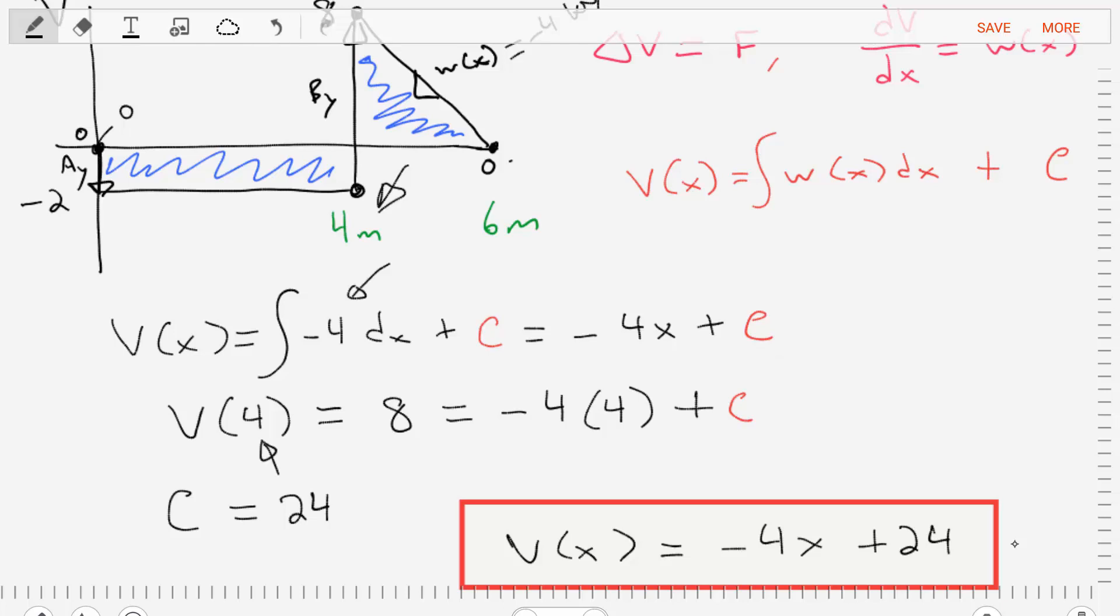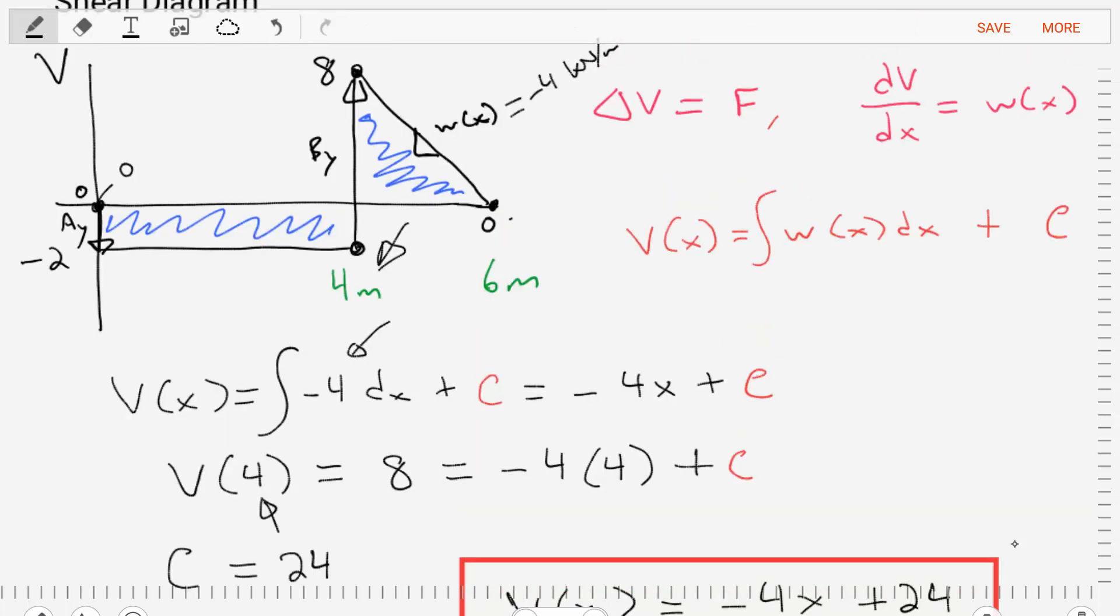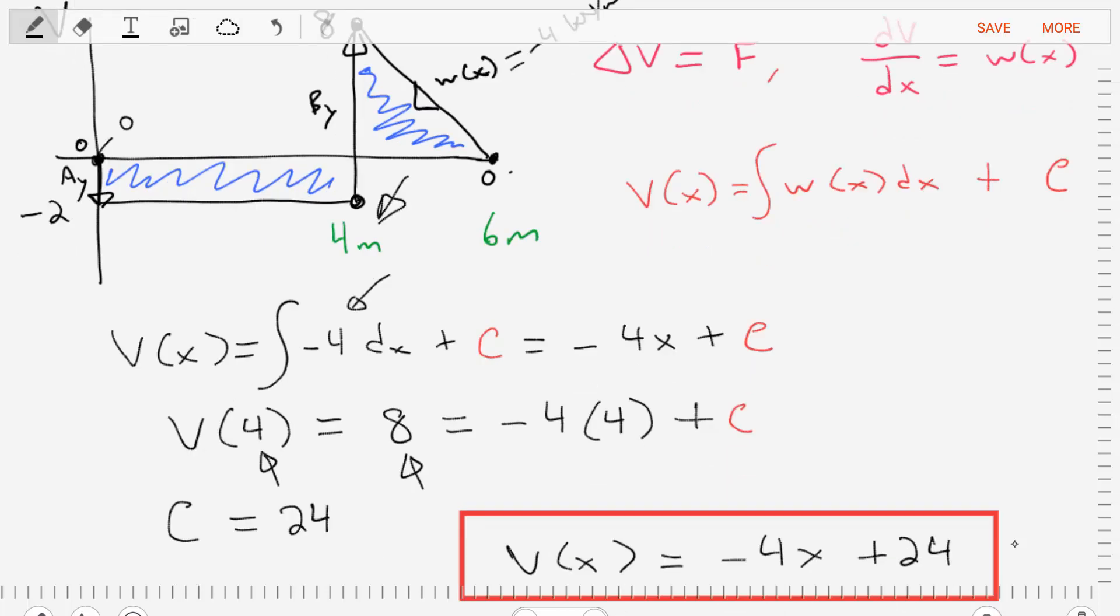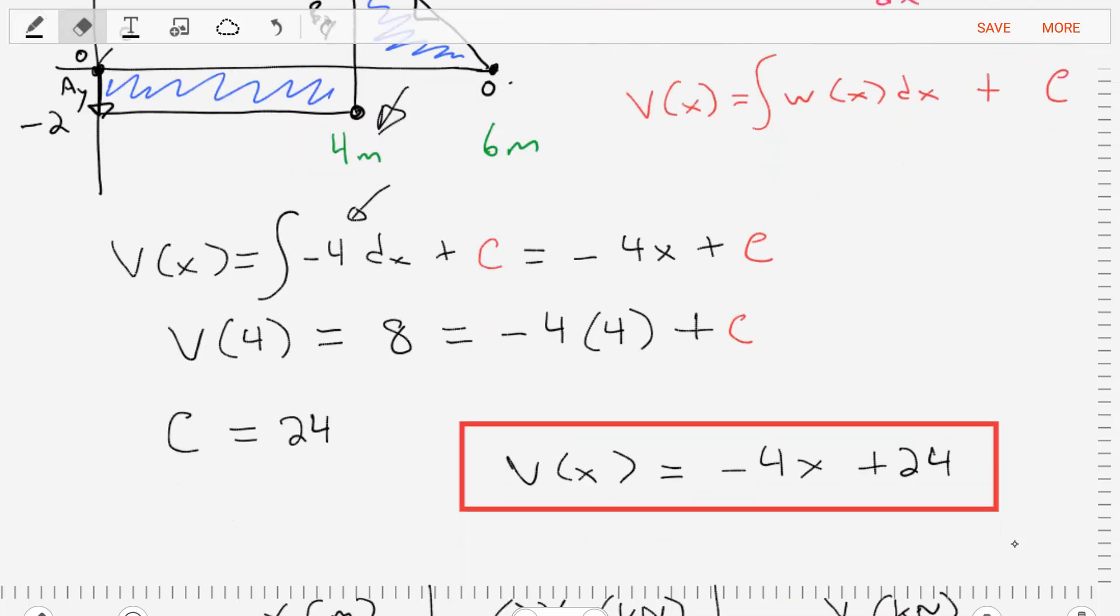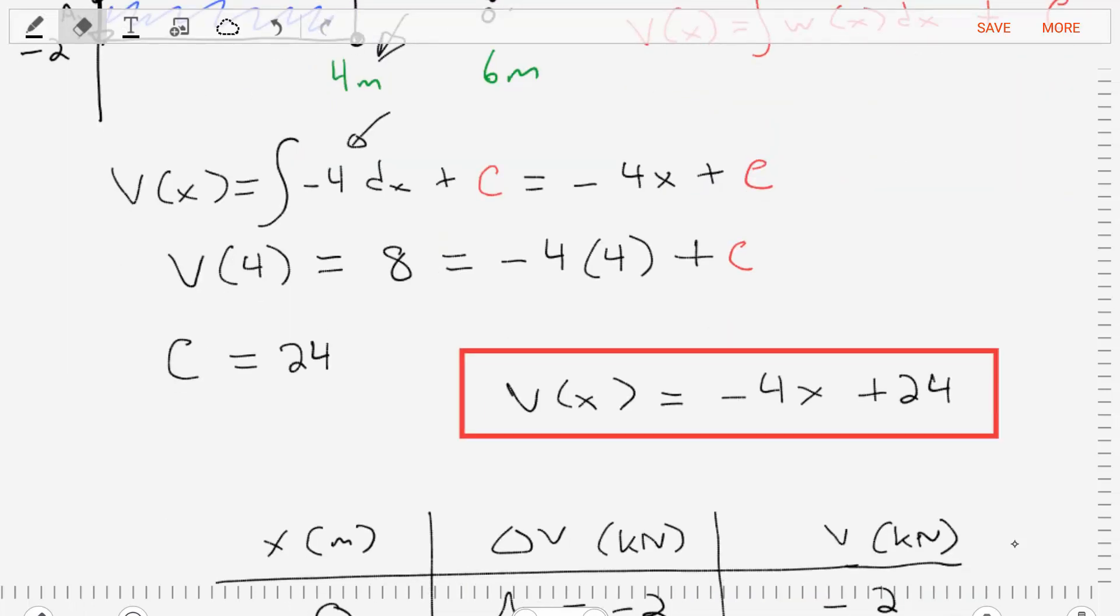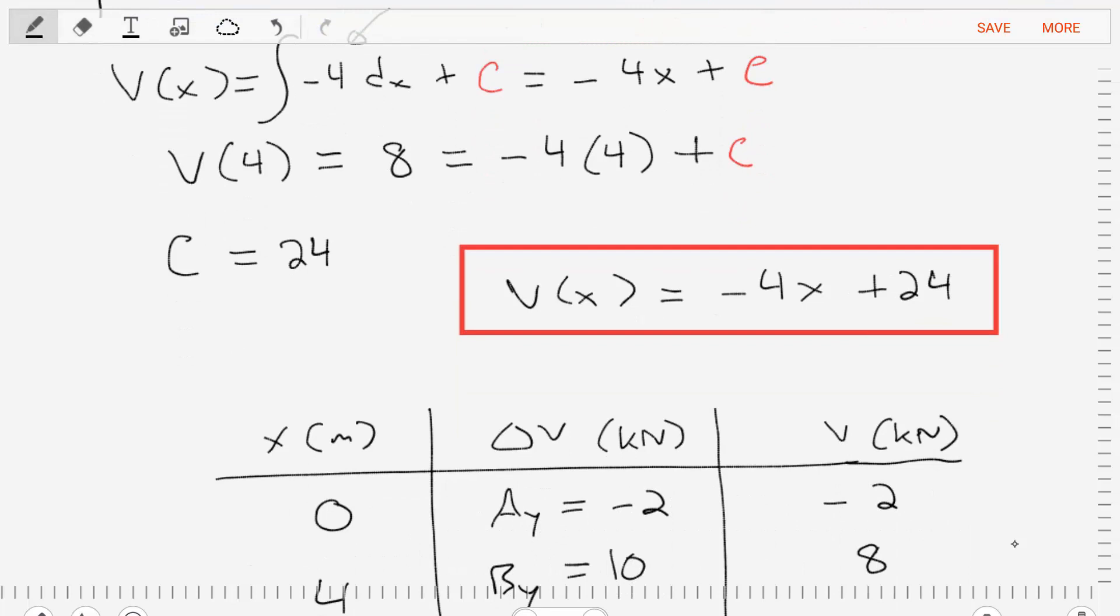We'll take a known position. We know at 4 meters the value of the shear force is 8. If we plug 4 meters in the equation, we can solve for the unknown C. We do that, we find C is equal to 24. So our shear force equation is negative 4x plus 24.